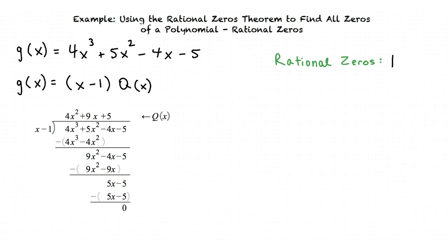This means that g of x equals x minus 1 times 4x squared plus 9x plus 5. And we find the remaining zeros of g of x by factoring 4x squared plus 9x plus 5. The factors are x plus 1 and 4x plus 5.